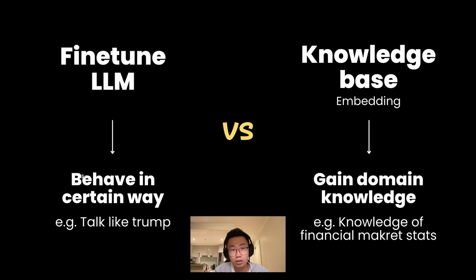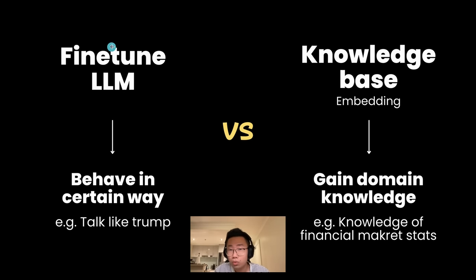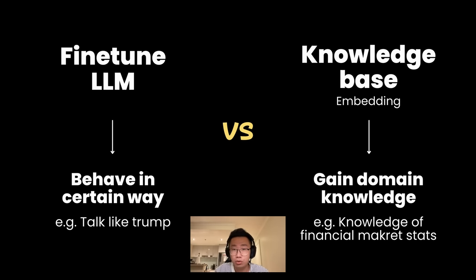Fine-tuning is good at making sure the large language model behaves in a certain way. For example, if you want to digitize someone — like get an AI that talks like Trump — that's where you'd use fine-tuning, because you can feed all that chat history or broadcast interview transcripts into the large language model so it can adopt a certain type of behavior.